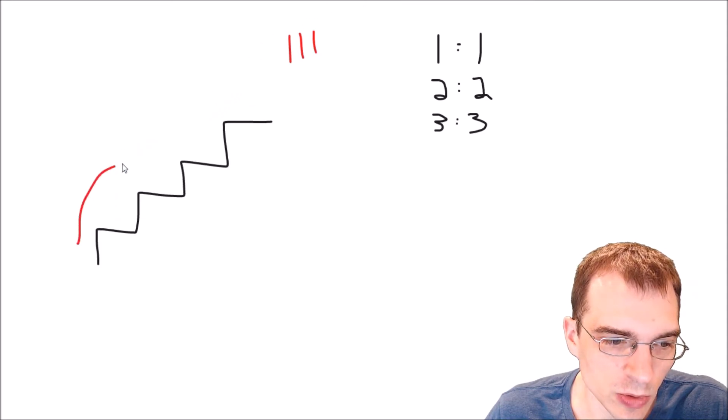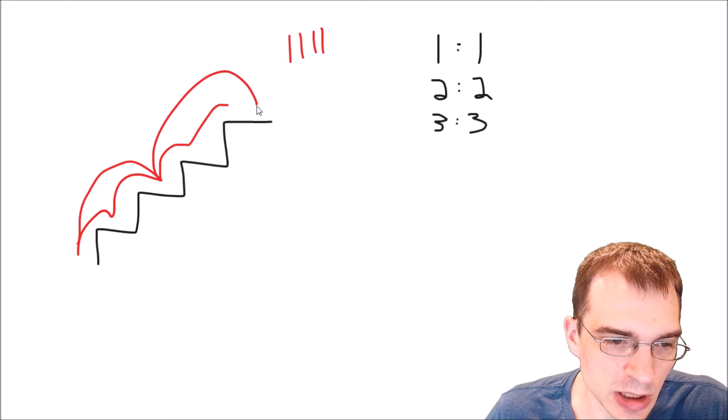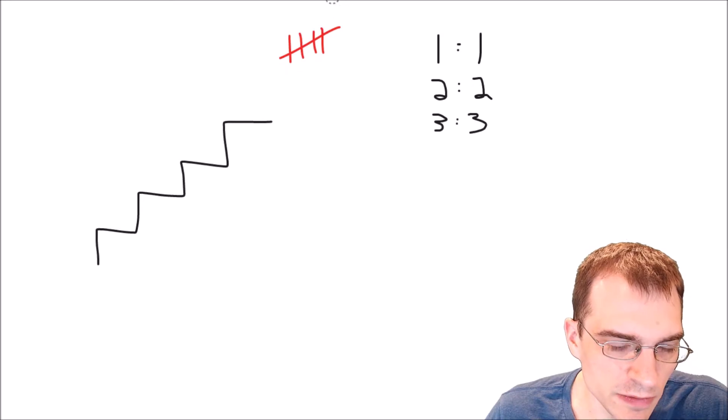We could do one big step first, and then two little ones. That's four ways. Or we could do the two little steps first, and the one big step at the end. That's five ways. And I believe for four, that's the, those are the only options.